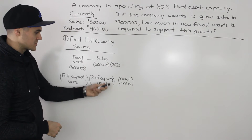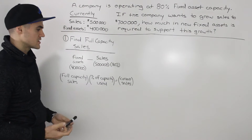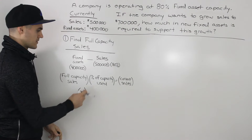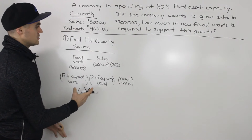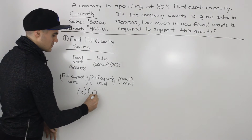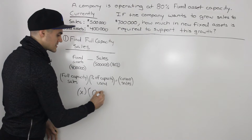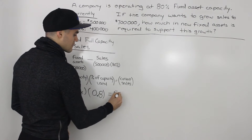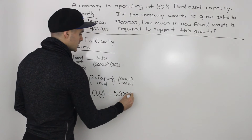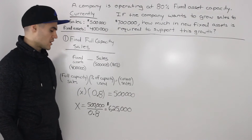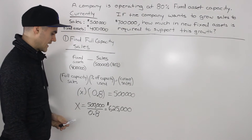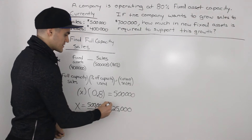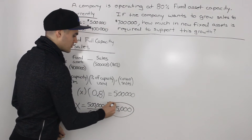To find the full capacity sales, we use the formula: full capacity sales times the percentage of capacity used equals the current sales. Full capacity sales is what we're solving for, so we put X there. The percentage of capacity used is 80%, so 0.8 in decimal form. Our current sales are $500,000. Solving for X, we take 500,000 divided by 0.8 and get $625,000. That represents our full capacity sales.